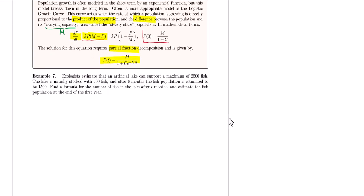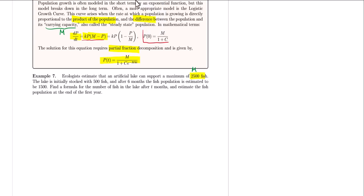Let's take a look at a problem where logistic growth is taken into account. Example 7: Ecologists estimate that an artificial lake can support a maximum of 2,500 fish — so our carrying capacity is 2,500. The lake is initially stocked with 500 fish, and after six months its population is estimated to be 1,500.